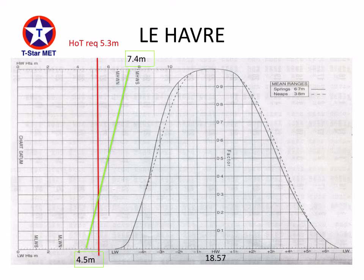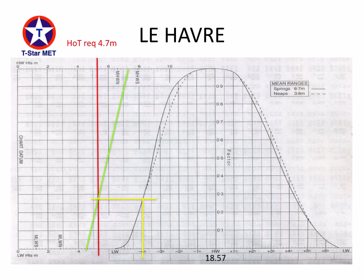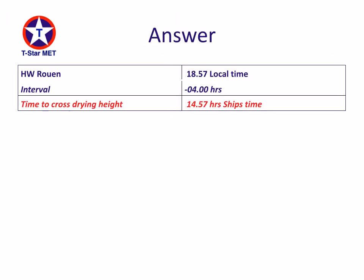The green line for the secondary port is placed on the graph with high water at 1857. Where the height of tide line at 5.3 metres meets the green secondary port curve, we take that across to the right and drop down to the bottom to get the time interval. The time interval calculated is exactly 4 hours before high water. So: high water Rouen 1857 minus 4 hours gives 1457 ship's time. Just before 3pm is the earliest time that the vessel can first cross that drying height.